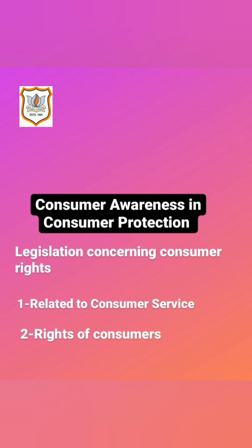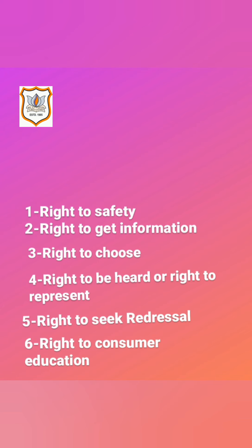The UN resolution called upon member states to set up legal mechanisms for the protection of the interest and rights of consumers. The Consumer Protection Act 1986 was enacted by the Union Parliament, which came into force on 24th December 1986. The state government of Gujarat enacted the Gujarat Consumer Protection Act on 18th February 1988. Consumer rights are divided into two categories: first, rights related to consumer service, and second, rights of consumers.